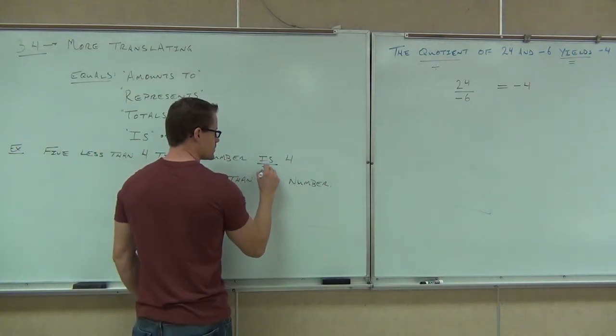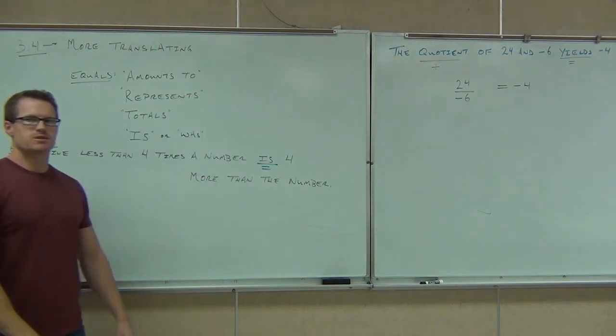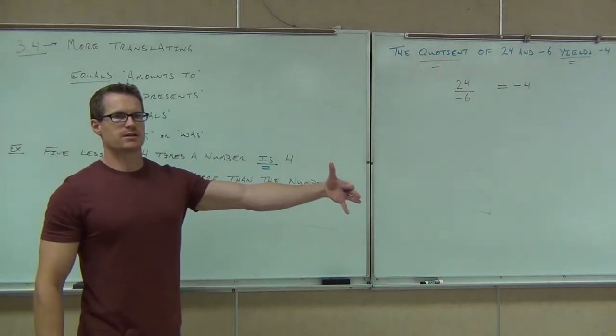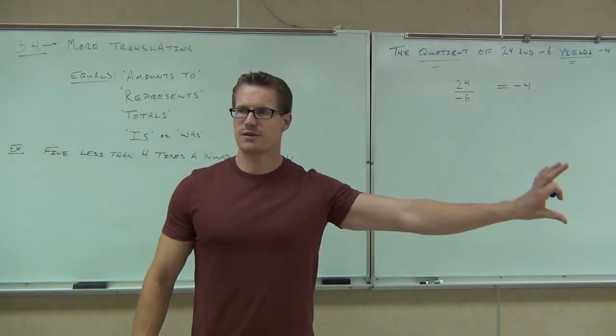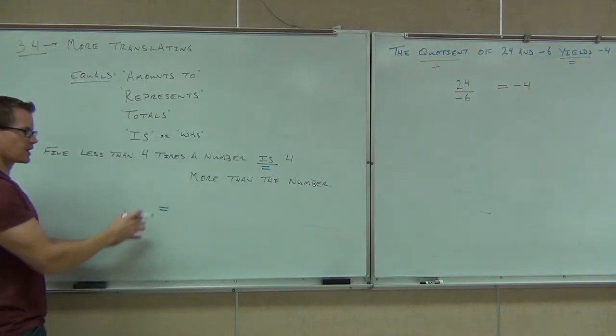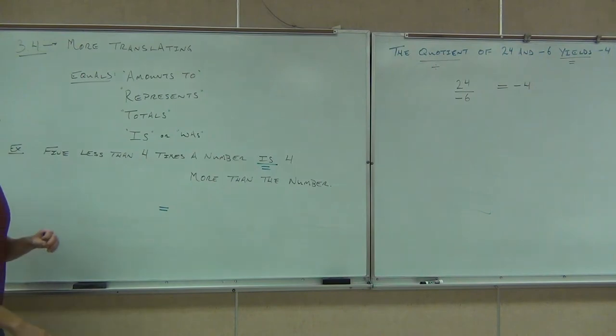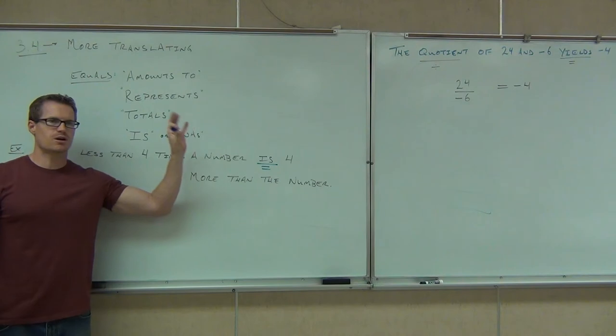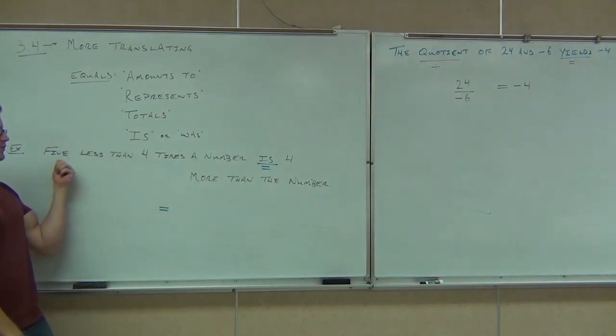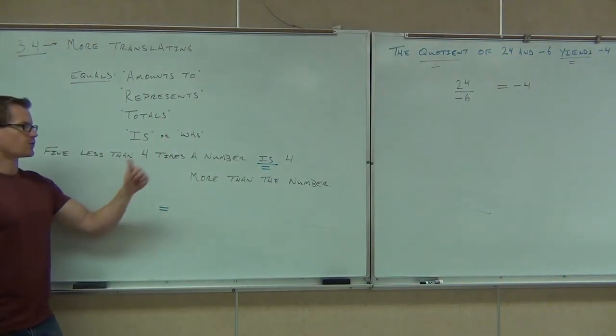What word is that? Is. Yeah, sure. I told you is means equals. Here's what's nice about these sentences. Whatever comes after the word is is going to be on the right-hand side of your equation. Whatever comes before the word is is going to be on the left-hand side of your equation. So it separates this into two expressions for us. Let's look at the first part of this. We're just going to consider five less than four times a number.